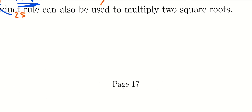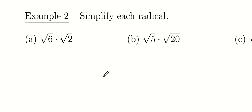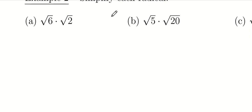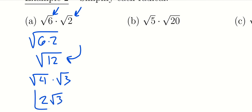The product rule can also be used to multiply two square roots. For example, the square root of 6 times the square root of 2: instead of splitting apart, we write them together under one radical. Six times 2 gives the square root of 12. That can be reduced: 4 divides 12 three times. The square root of 4 is 2, leaving 2√3 as the final answer.